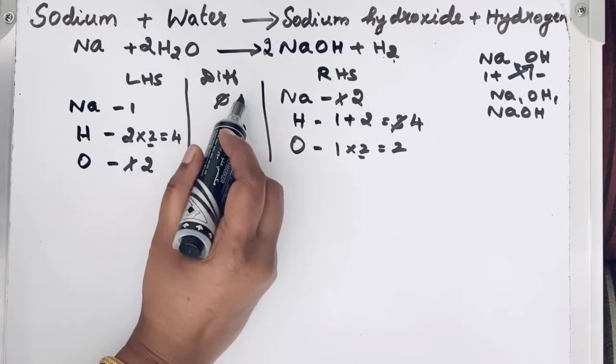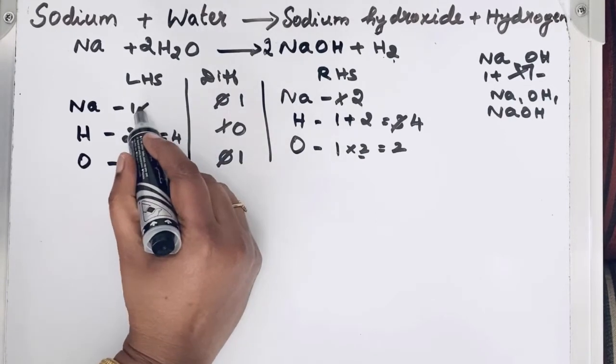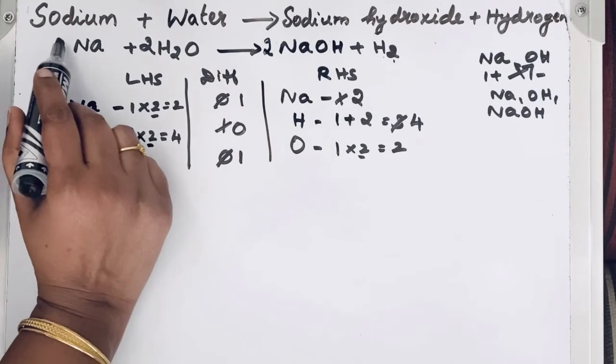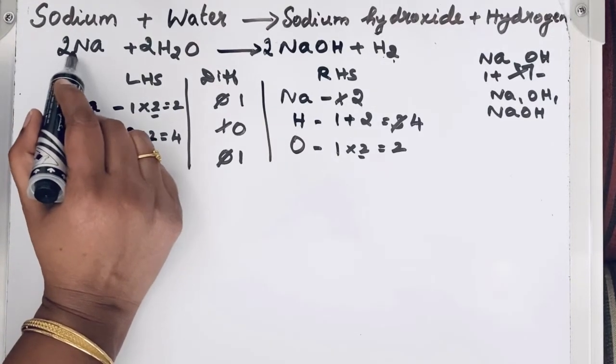So to make it 0 in the difference column, let us multiply with 2. This 2, as a coefficient, let us write in front of sodium 2, Na.